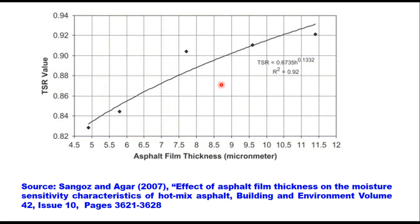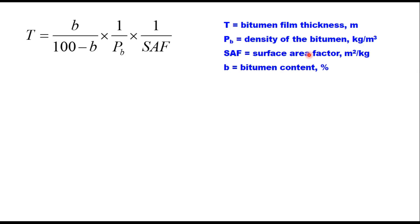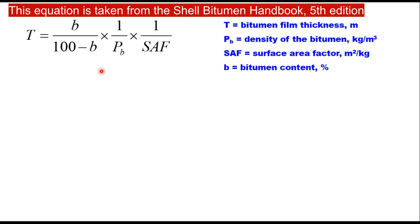IRC 135 suggests use of this equation to calculate bitumen film thickness: T = (B / (100 − B)) × (1 / ρ_b) × (1 / SAF), where T is the film thickness in meters, B is the bitumen content in the mix, ρ_b is the density of the bitumen, and SAF is the surface area factor in m²/kg. This equation is borrowed from the Shell Bitumen Handbook, fifth revision.